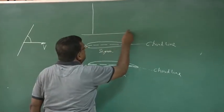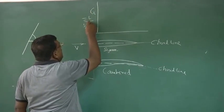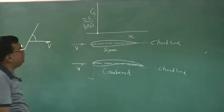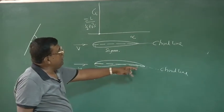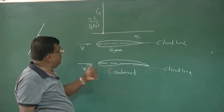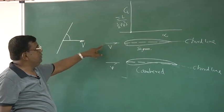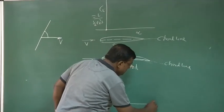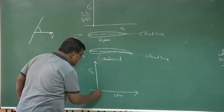If I draw CL, which is nothing but lift divided by half rho V squared S, versus angle, at alpha equal to 0 I will also get zero lift or zero CL. But for cambered, the very fact that this chord line is no more parallel to the velocity vector means it effectively has an angle with the velocity vector, even if it is at alpha equal to 0. So even at alpha equal to 0, there will be some lift.